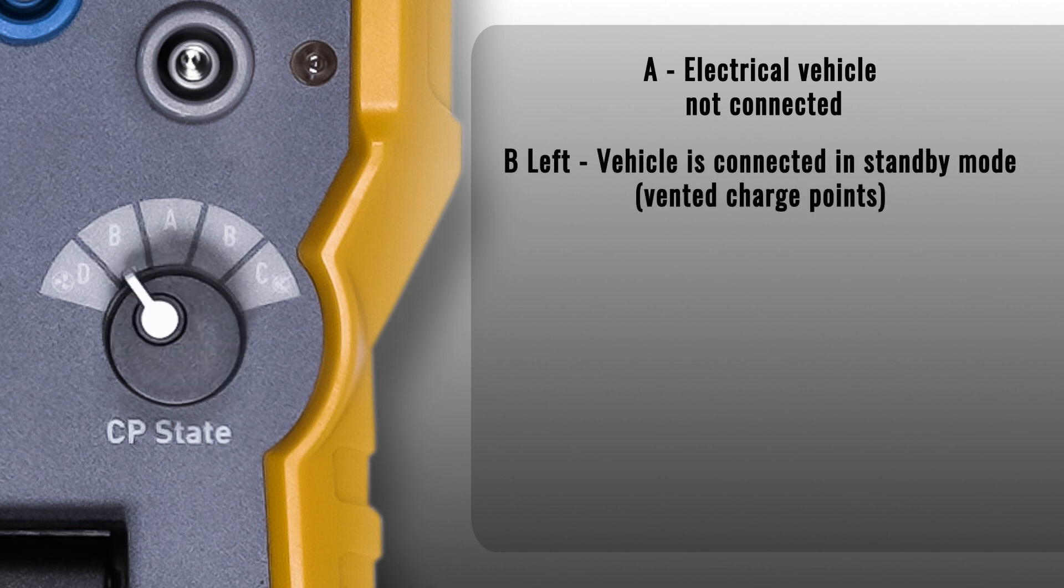B left: Vehicle is connected. The charge point is now energised and in standby mode. This is for connection with vented charge points.